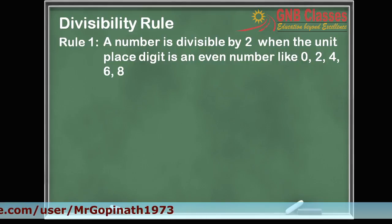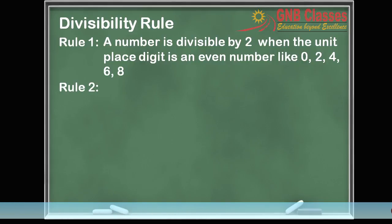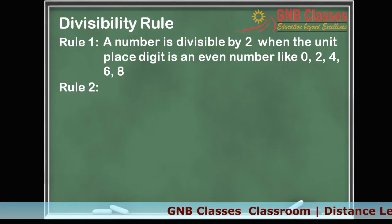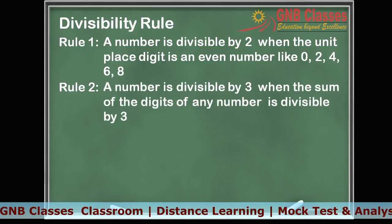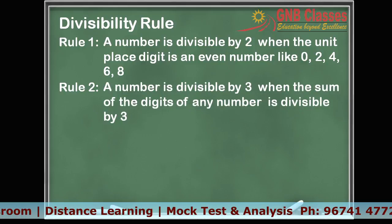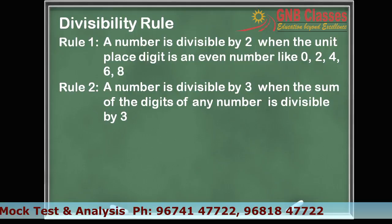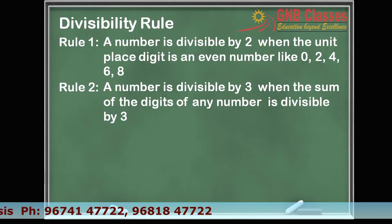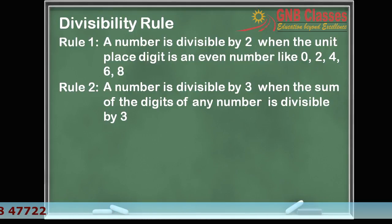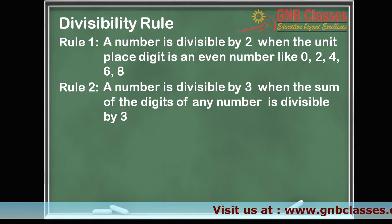Rule 2 is all about checking whether a number is divisible by 3 or not. Any number is divisible by 3 if the sum of all the digits present in that number is divisible by 3. So whenever a number is given, if we add up all the digits and that resultant sum is divisible by 3, then the whole number is divisible by 3.